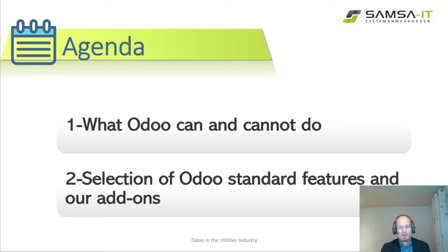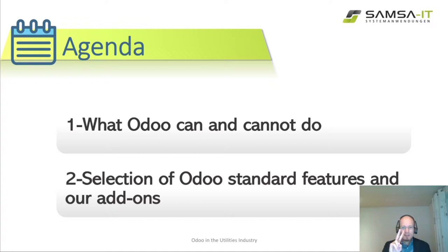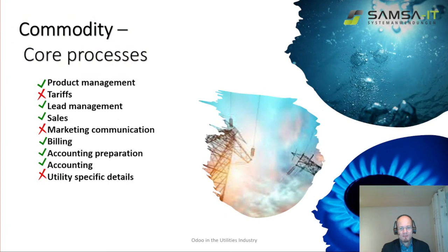First I will talk about what Odoo can and cannot do, which will merely give you an idea of the available functionality. The second part will go through a few Odoo features and add-ons as examples. We will do this twice — once for commodity and a second time for non-commodity.